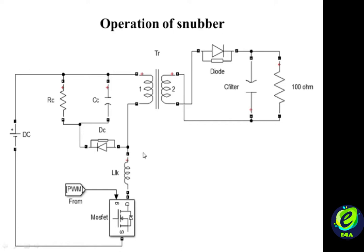After that, we also understood the operation and placement of the RCD-based snubber circuit in the flyback converter. However, the RCD-based snubber suffers from some drawbacks.